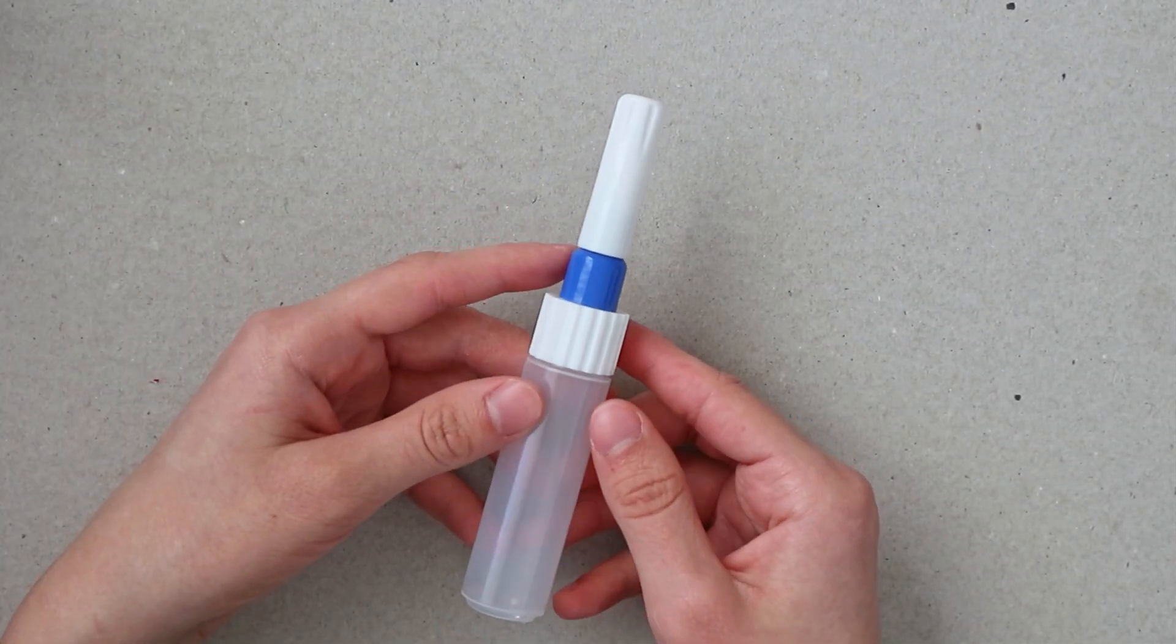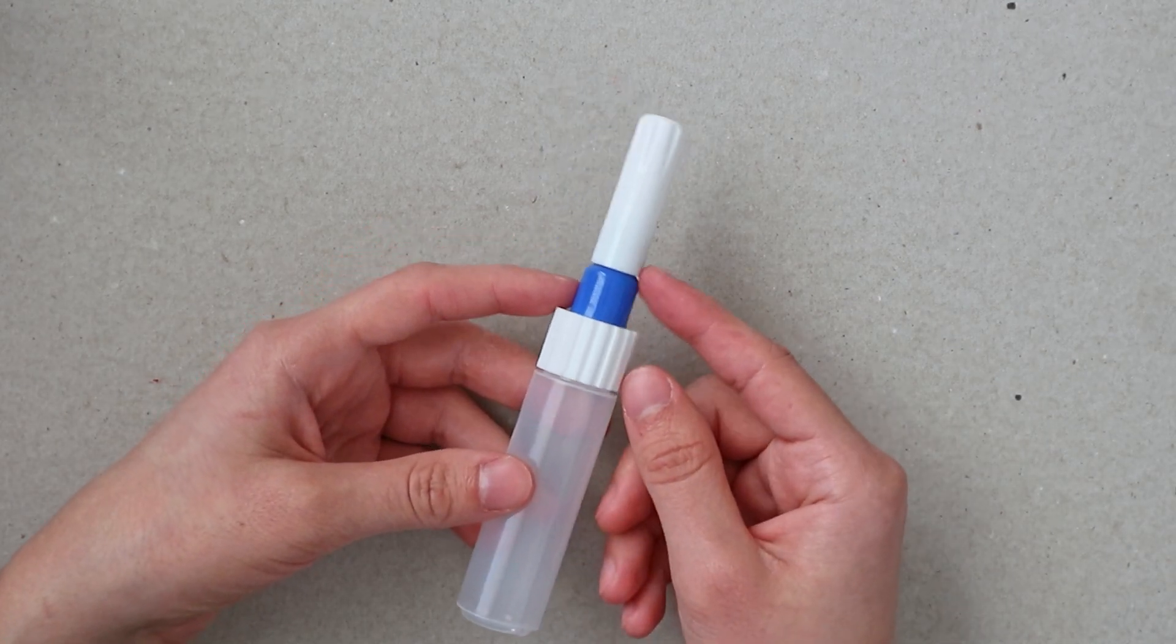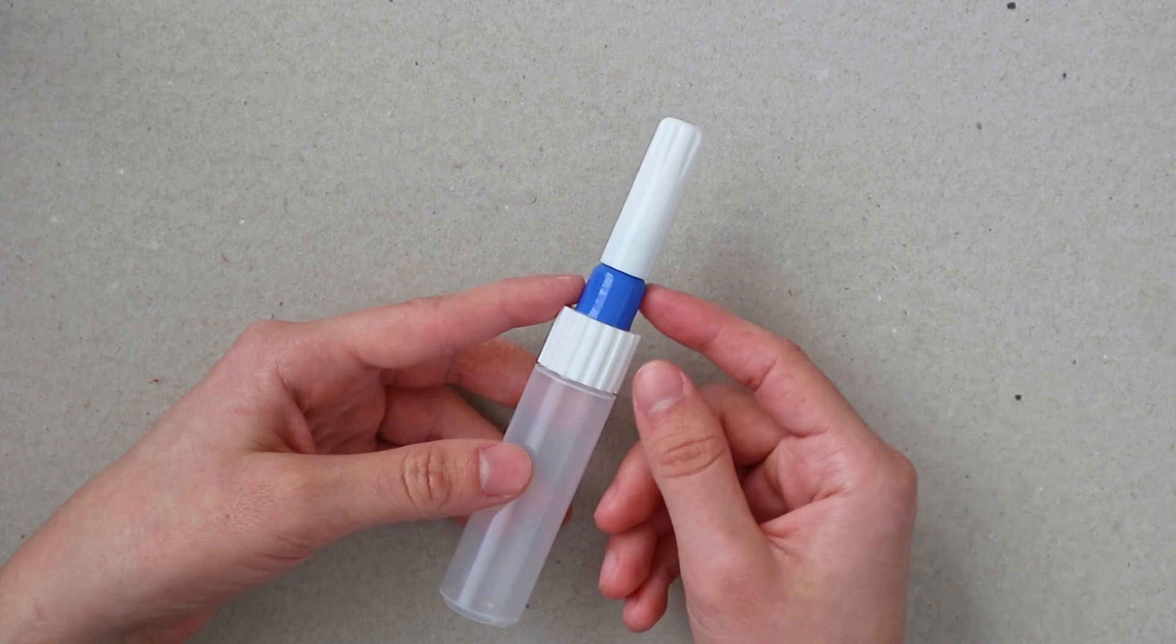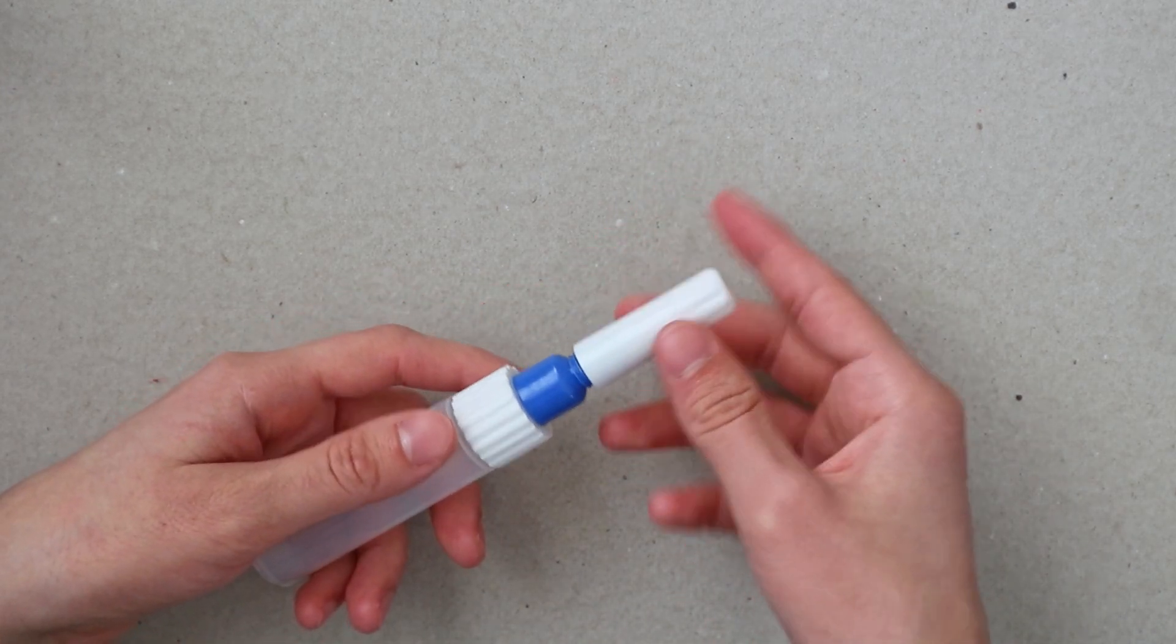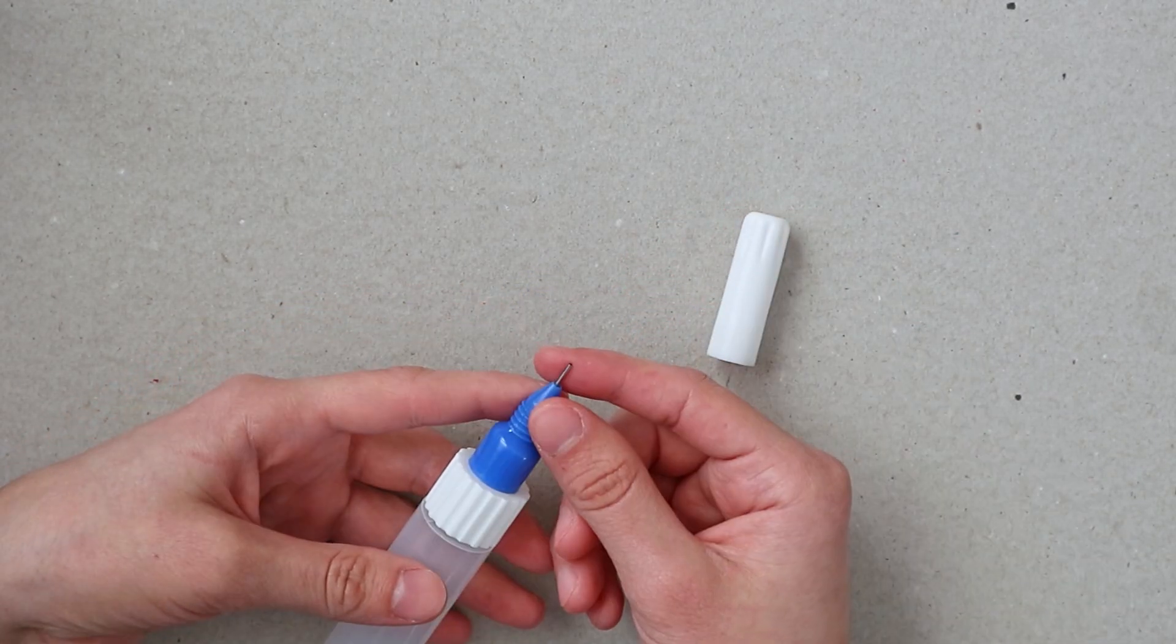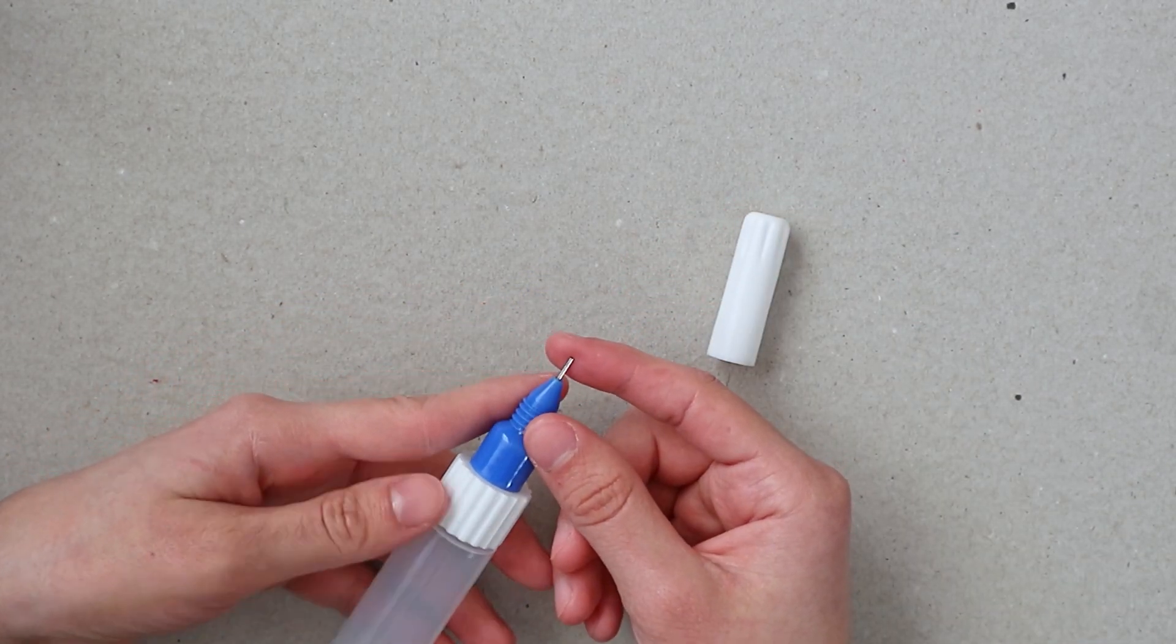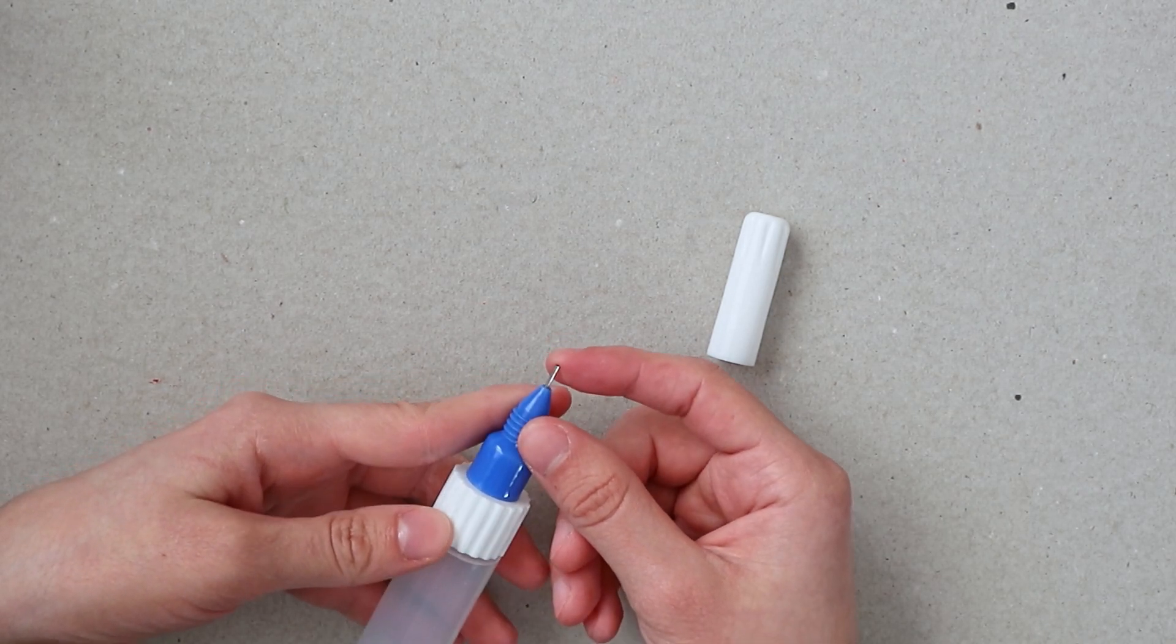I've also recently bought another container which is similar to the previous one. The only difference is that it has a finer tip at the top. This one's tip is 0.6 millimeters wide and my previous one was one millimeter in size at the top.